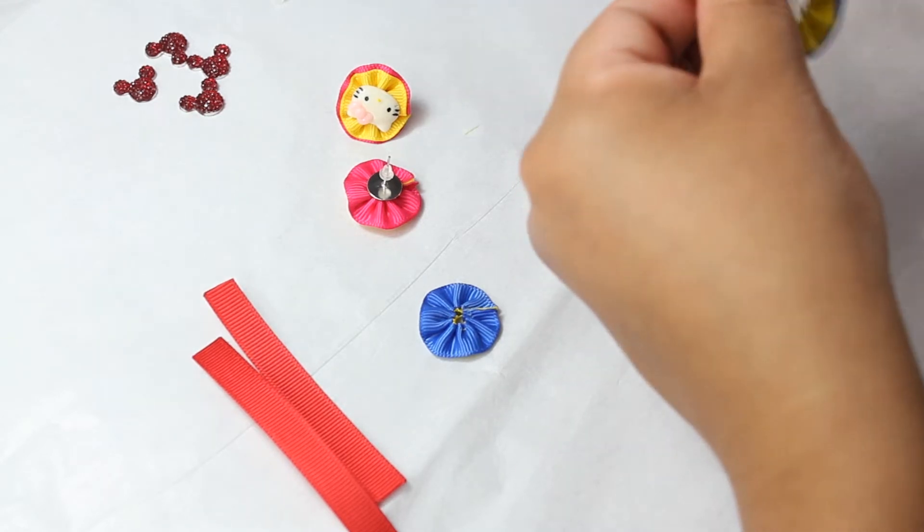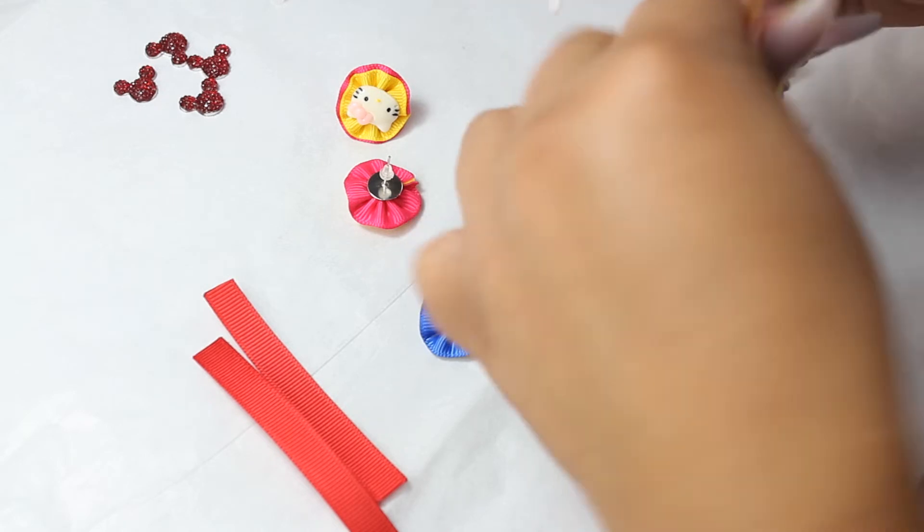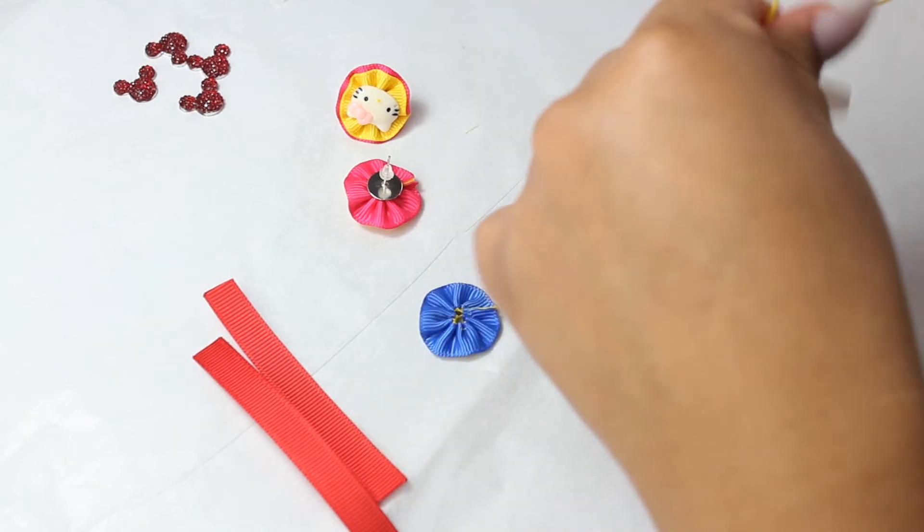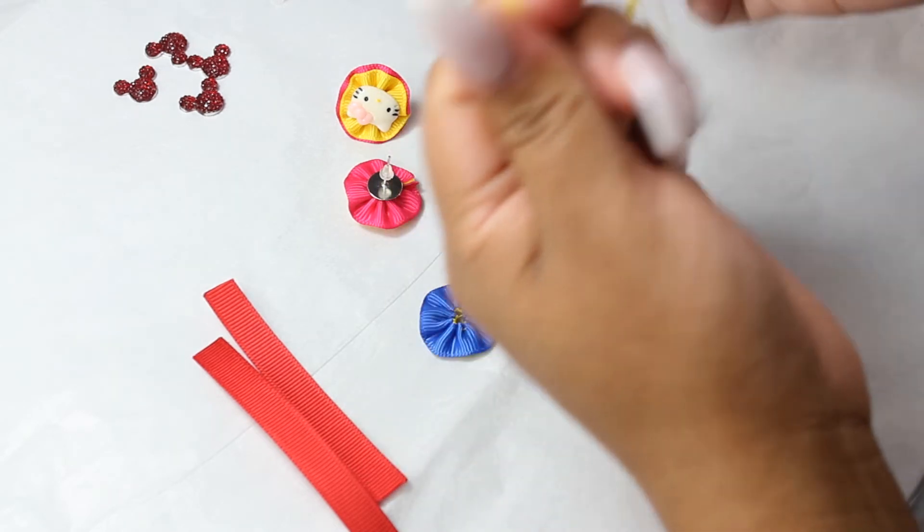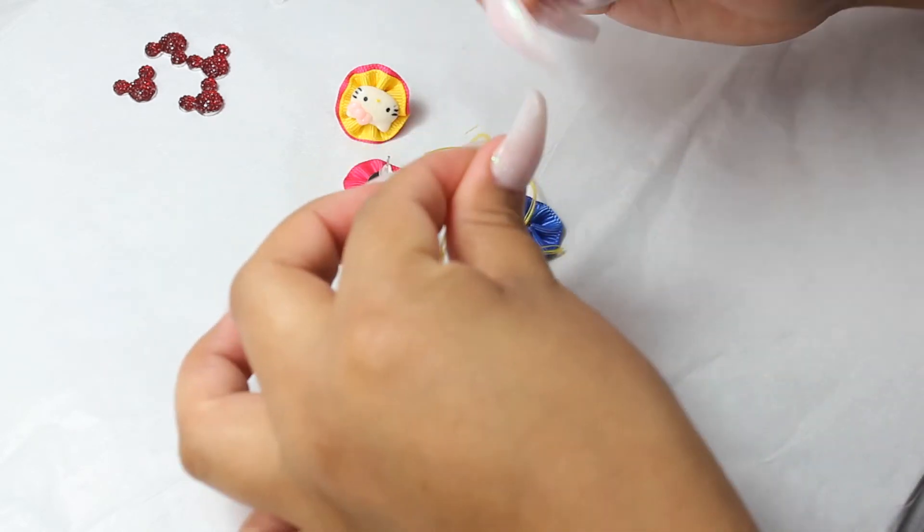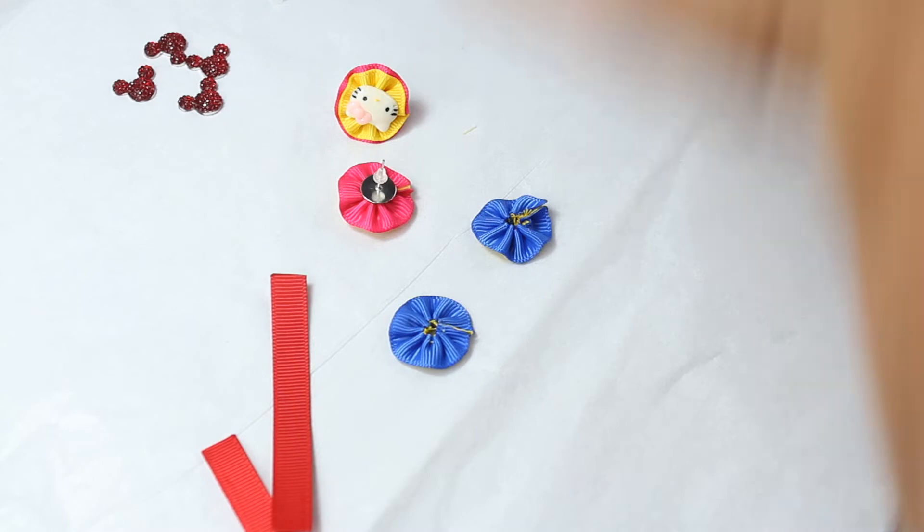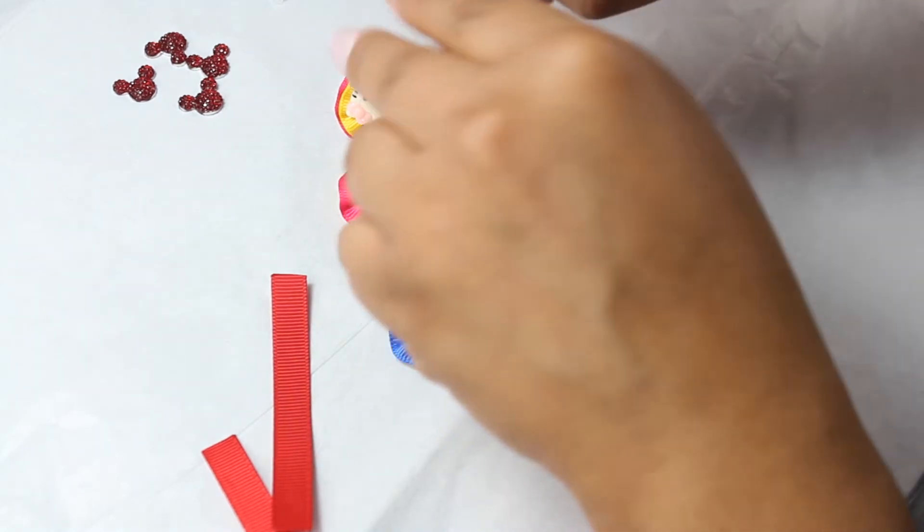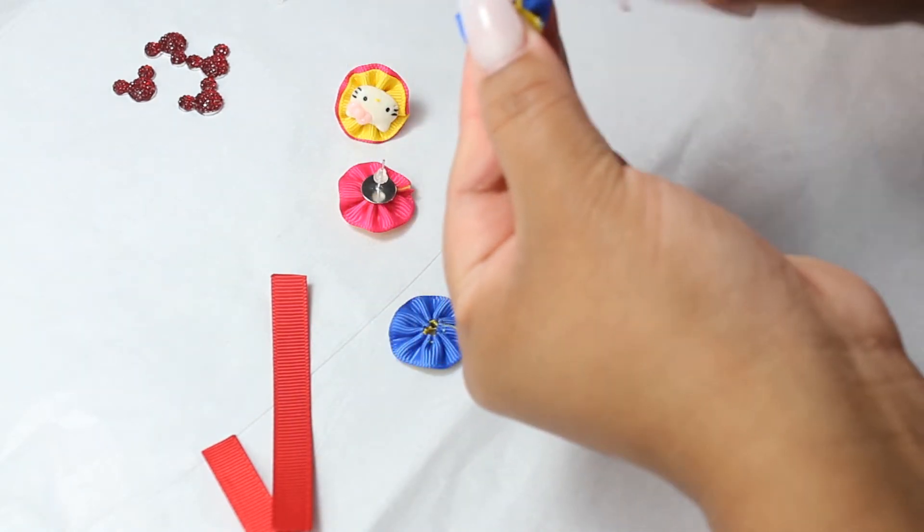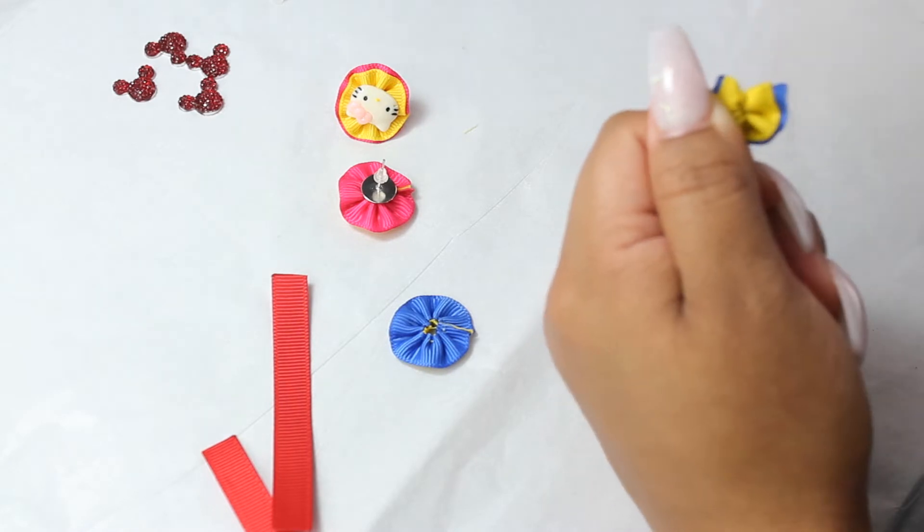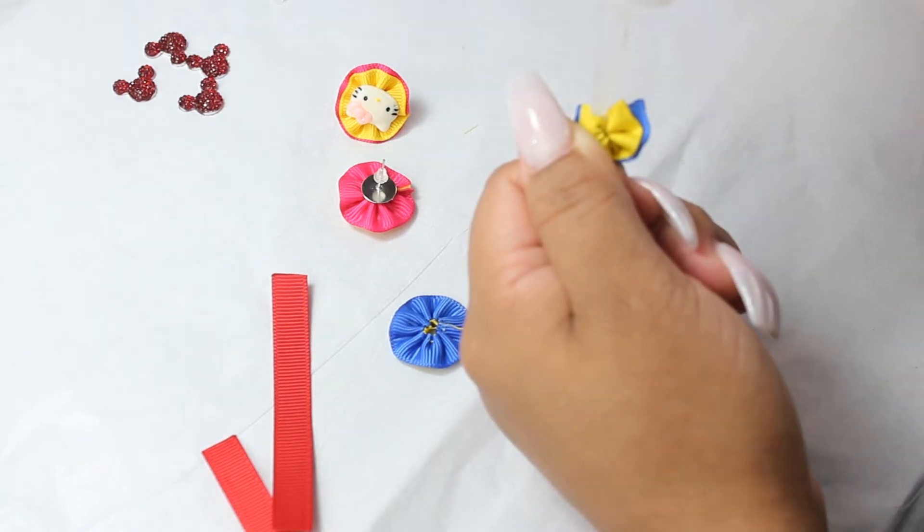Now we're done with this one. Now you want to go ahead and tie them together, make sure it's tight. Just cut this off and let's add a little bit of glue there. You can use fabric glue or you can actually use a glue gun, so it doesn't really matter.